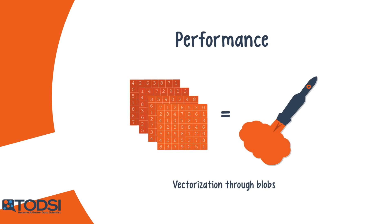CAFE vectorizes input data through a special data representation called a blob. A blob is a type of array that speeds up data analysis and provides synchronization capabilities between a CPU and a GPU.